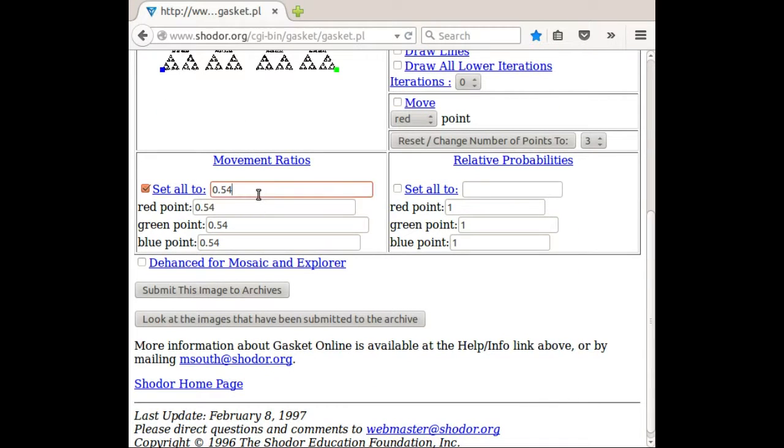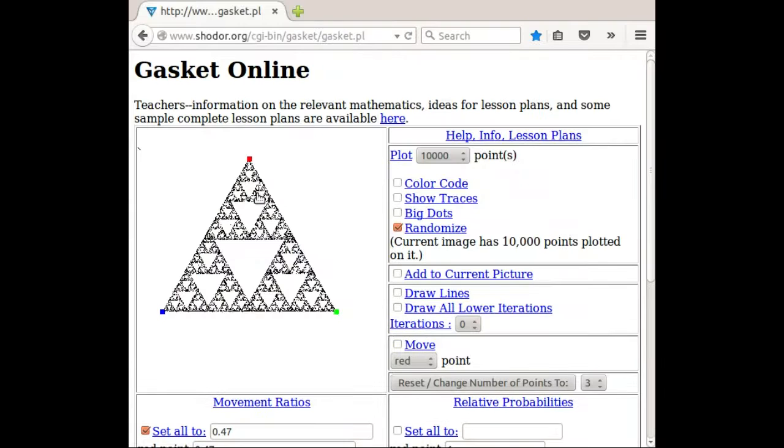We could do something else. We could go over here and maybe change this into 0.47. And then we get some overlap. It's not quite as clean a Sierpinski triangle as before. The triangles overlap themselves a little bit.